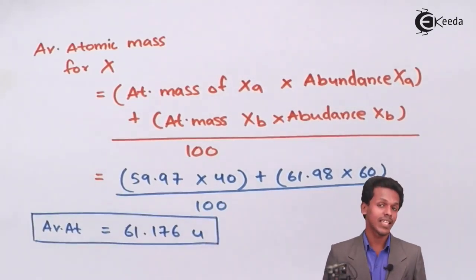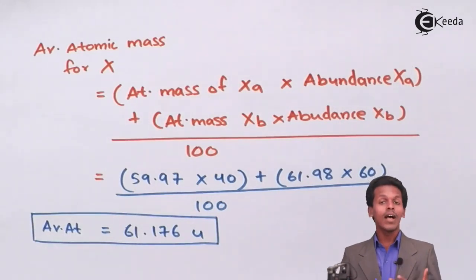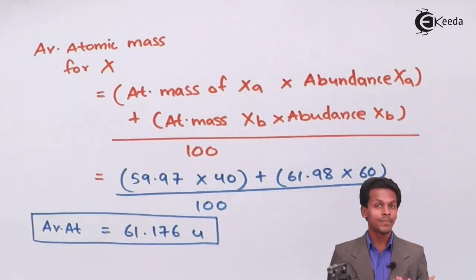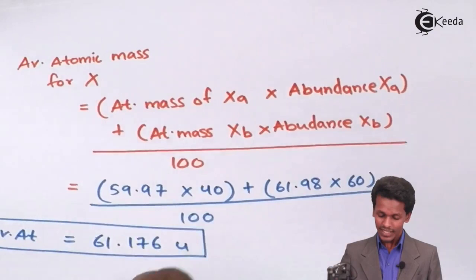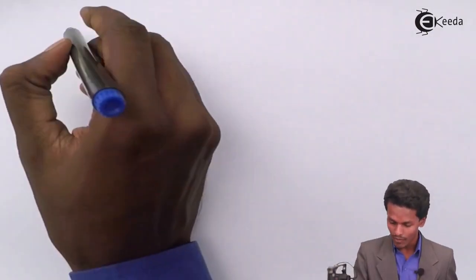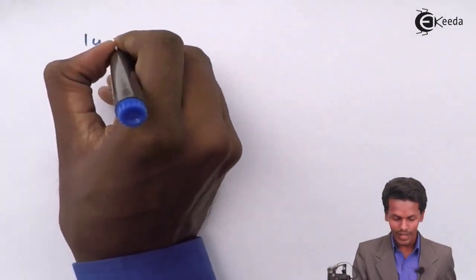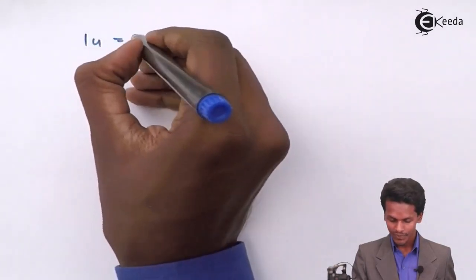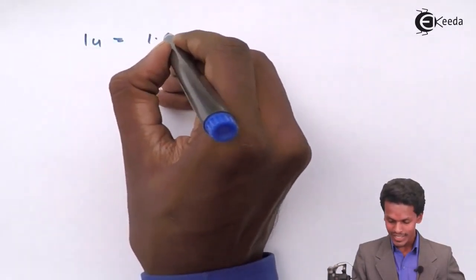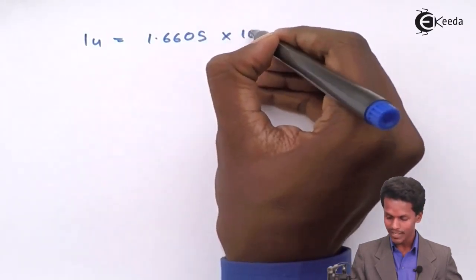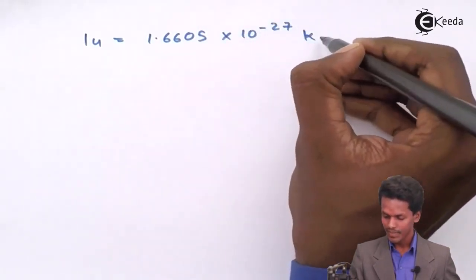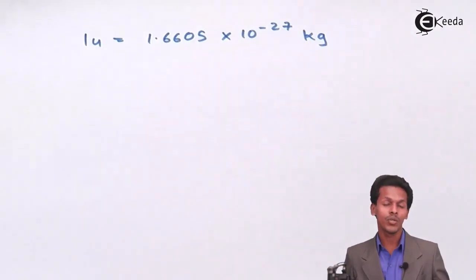But this is not the final answer. They have also asked to calculate the answer in kg. For that, we know that one unified mass equals 1.6605 × 10⁻²⁷ kg.